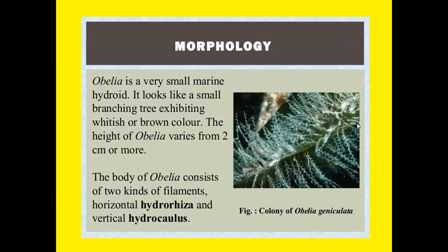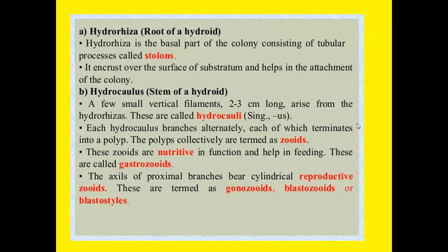Morphology: Obelia is a very small marine hydroid. It looks like a small branching tree, appearing whitish or brown in color. The height of Obelia varies from two centimeters or more. The body of Obelia consists of two parts of filaments: horizontal ones called the hydrorhiza and vertical ones called the hydrocaulus.